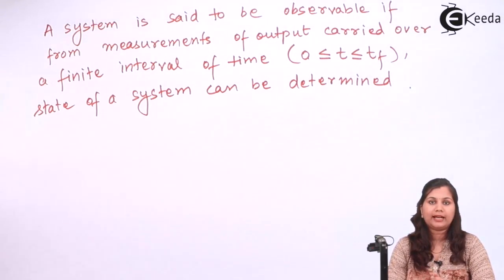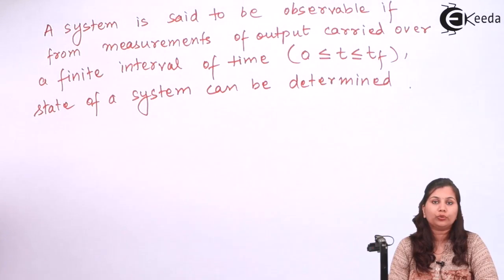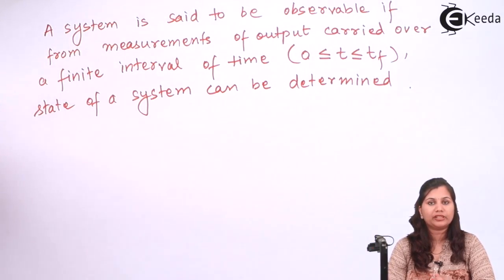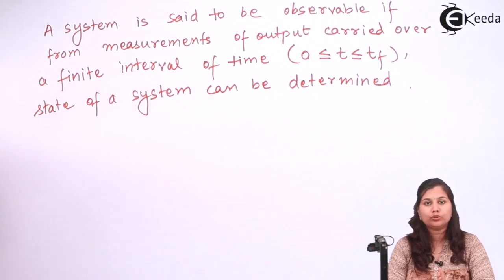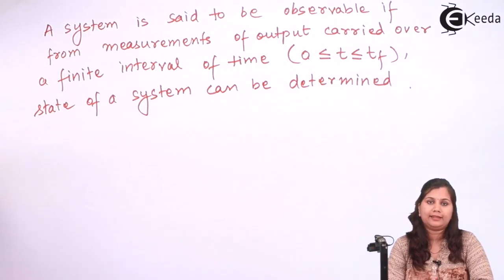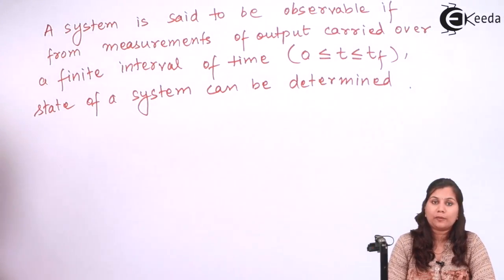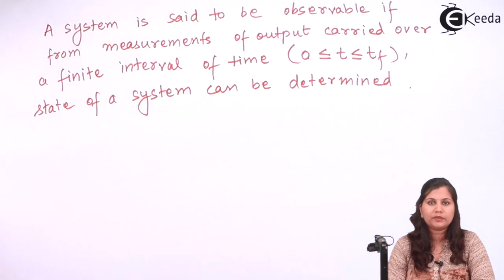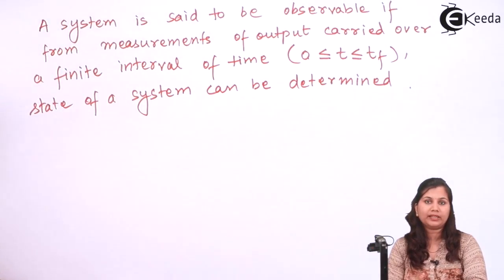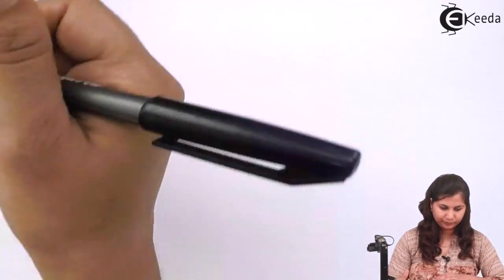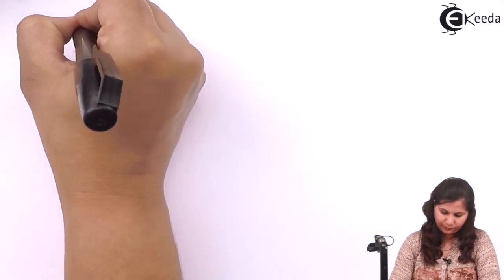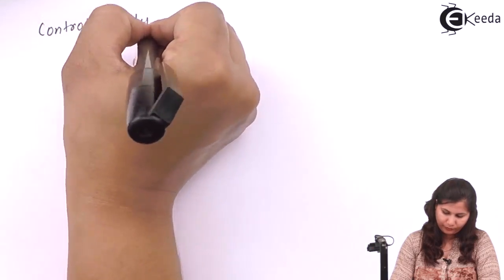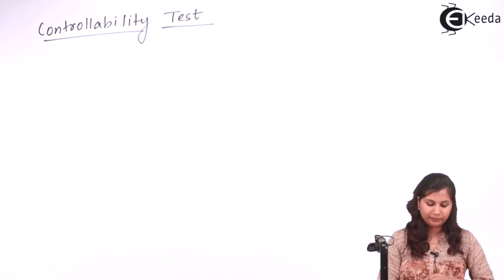Kalman defined how we can measure the controllability and observability of a system. If the state model is given to us, through the state model we can determine whether a system is controllable or not, and whether it is observable or not. Let's see how we can determine this — this is the controllability test defined by the scientist Kalman.